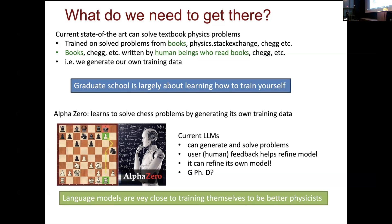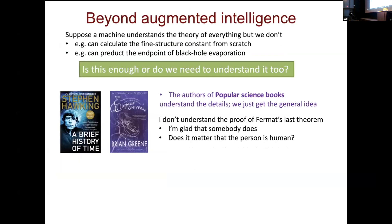Large language models are very close to training themselves like AlphaZero to become better physicists. We're very close to doing that, and I don't see any real limitation to going from undergraduate to graduate level — it's just a little bit more complex. So what happens next? Suppose we get this working: we have machine intelligence and we become 10,000 Einsteins. But eventually, when you go beyond what we can visualize and understand, machines might need to do it without us. And there's a really difficult question: if a machine understands the theory of nature but we don't, is that worth it? Should we be satisfied that nature is understood if a machine can't explain it to us?